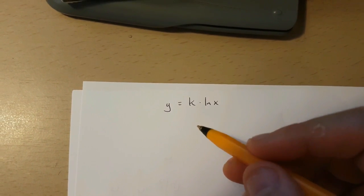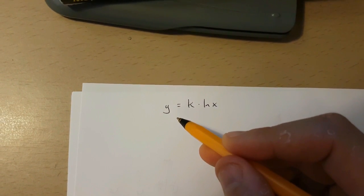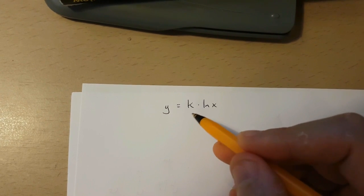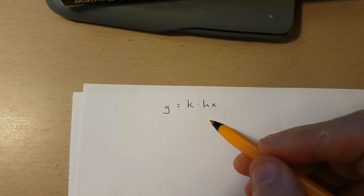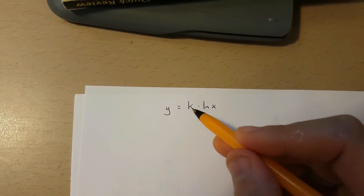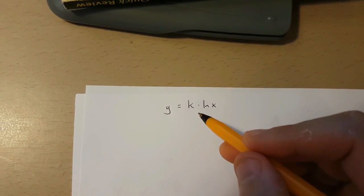Hello guys, in this video I'm going to be showing you how to differentiate y equals k times ln x using implicit differentiation, whereby k is a constant.